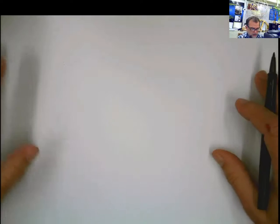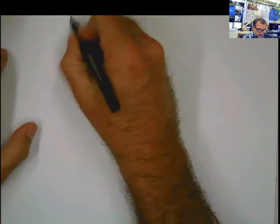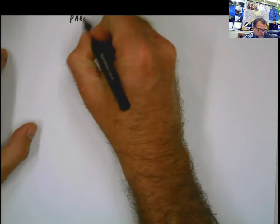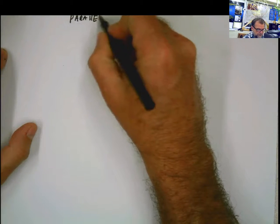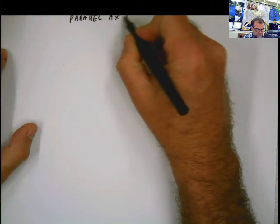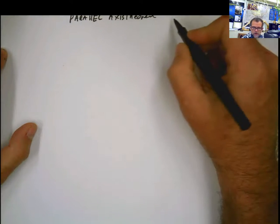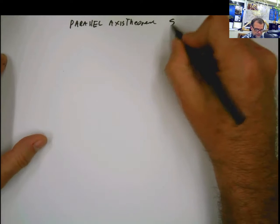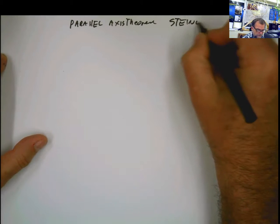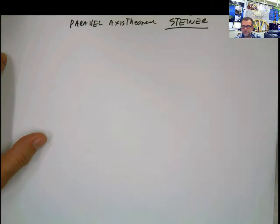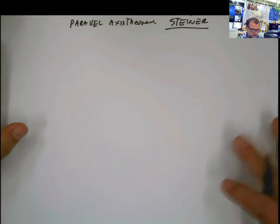Hey guys, again. Let's talk a little bit about something that is really cool related to moment of inertia. It's called the parallel axis theorem, which is also called the Steiner theorem, because that was one of the people that actually created the theorem. This theorem is really cool.